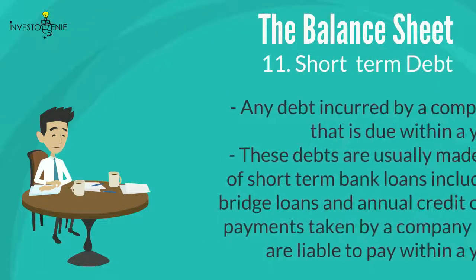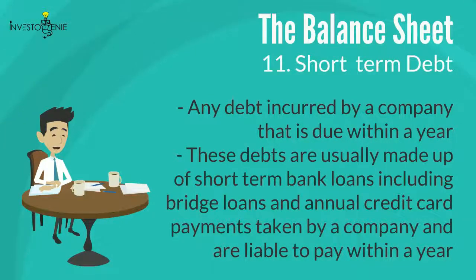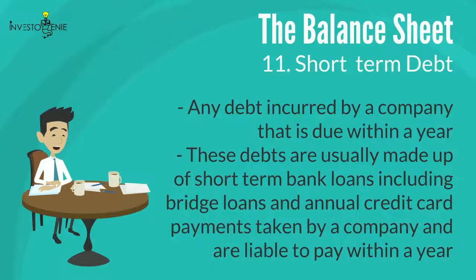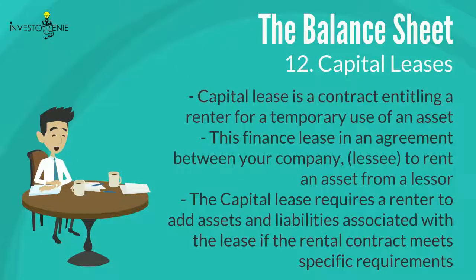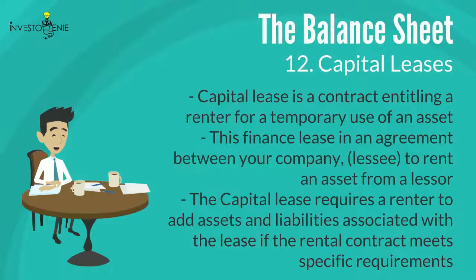Eleven: short-term debt is made up of any debt incurred by a company that is due within a year. These debts usually include short-term bank loans, bridge loans, and annual credit card payments. Twelve: capital lease is a contract entitling a renter to temporary use of an asset. This finance lease is an agreement between a company (lessee) to rent an asset from a lessor. The capital lease requires a renter to add assets and liabilities associated with the lease if the rental contract meets specific requirements.